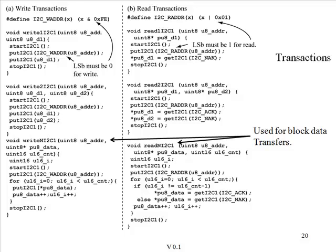Let's look at a couple of specific code examples. Here's one of the higher level functions: write I2C1. We begin with a start, output the address with the write bit set, output one data byte, and then stop. To write two data bytes: again a start, send the address with the write bit set, two data bytes, and a stop.